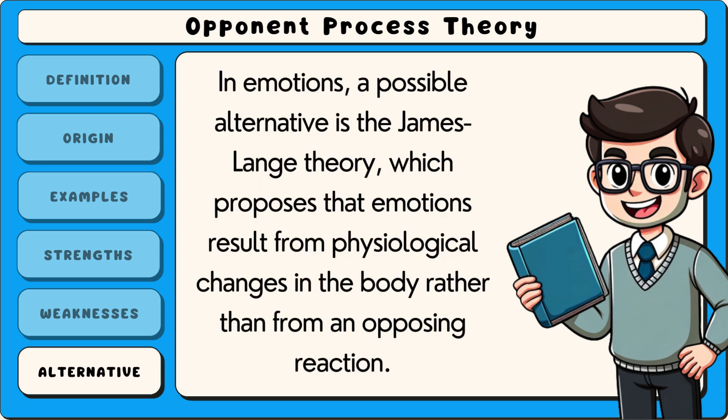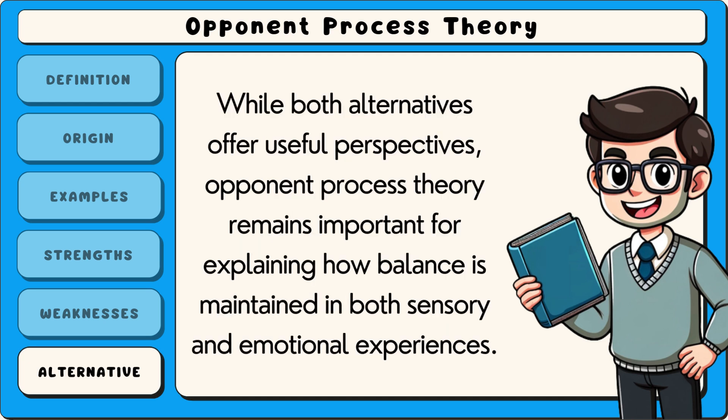In emotions, a possible alternative is the James-Lange theory, which proposes that emotions result from physiological changes in the body rather than from an opposing reaction. While both alternatives offer useful perspectives, opponent process theory remains important for explaining how balance is maintained in both sensory and emotional experiences.